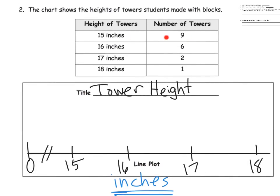Then we can go ahead and start plotting. We have nine people who have 15 inch towers, so one, two, three, four, five, six, seven, eight, nine. Then we have six people with 16 inches, one, two, three, four, five, six. We have two people with 17 inch towers, one, two. And we have one person with an 18 inch tower.